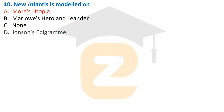Question number 10: New Atlantis is modeled on Thomas More's Utopia. Francis Bacon regarded More's Utopia as a model when he started writing New Atlantis, his utopian work, which was published posthumously in 1627 after Bacon's death, and remained his incomplete work.